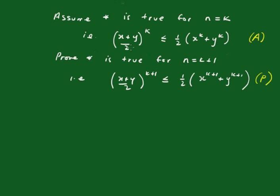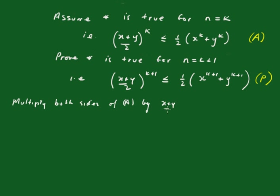Now we're going to try and match the left-hand sides. To do that, multiply both sides of the assumption statement by (x plus y)/2. That will match up the left-hand sides. So we get (x plus y)/2 to the k plus 1 is less than or equal to one half times (x to the k plus y to the k) times (x plus y)/2.